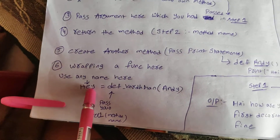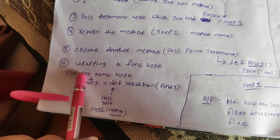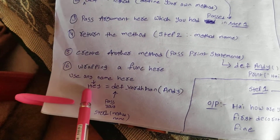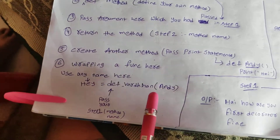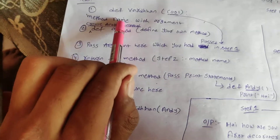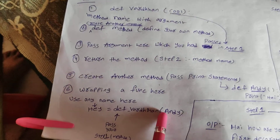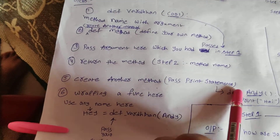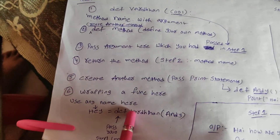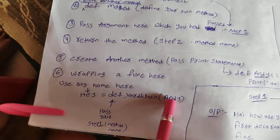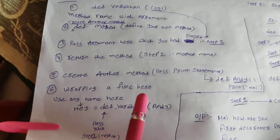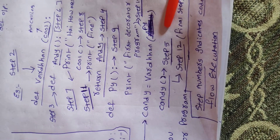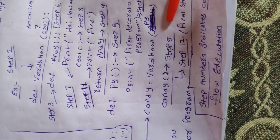So after that we'll be wrapping a function here. Make sure you can create any method name or variable name. After creating the variable name, make sure you need to call your first method name and after that you need to call your second method name which you had created. These are the steps about your decorators. Now we'll be moving on to this program — I'll provide each and every point in the description, so please go through there.